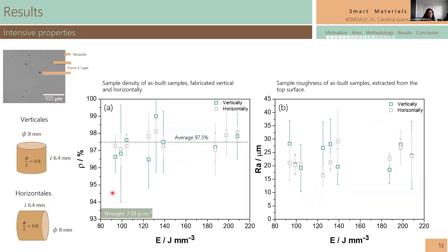Regarding results, as you see here, I have the density and surface roughness of the top surface for both vertical and horizontal samples, plotted versus the volumetric energy used to construct each sample. We reached around 97% density, which is great. The roughness was around 20 to 25 micrometers, which is similar to the particle size distribution range.